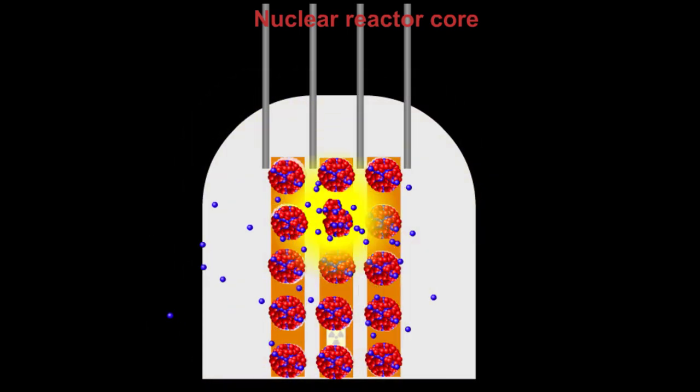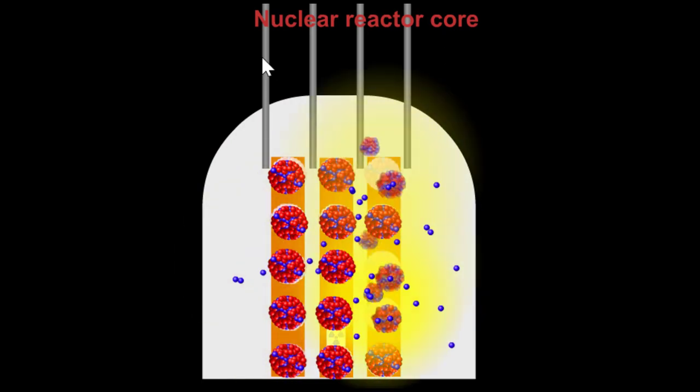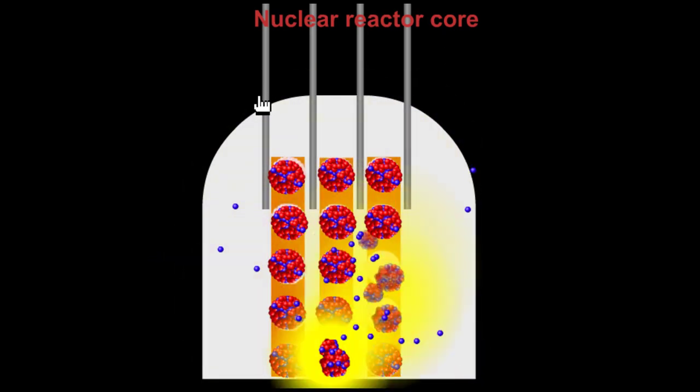If we want to reduce the power of the reactor, in other words reduce the number of fissions per second, then we lower the control rods.